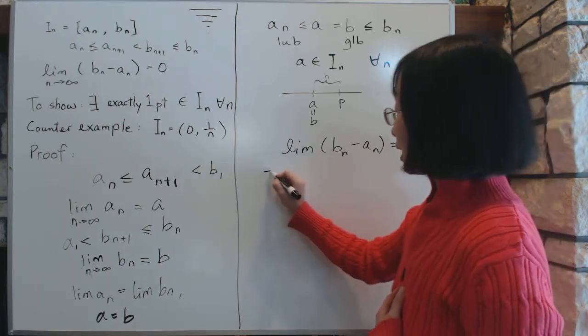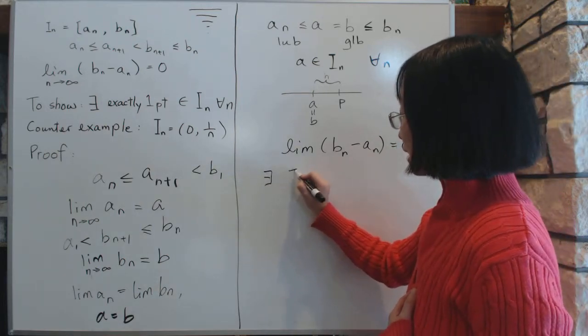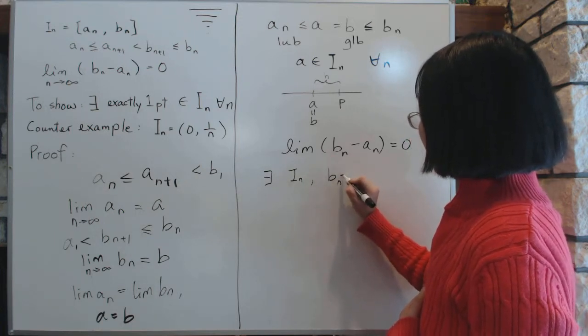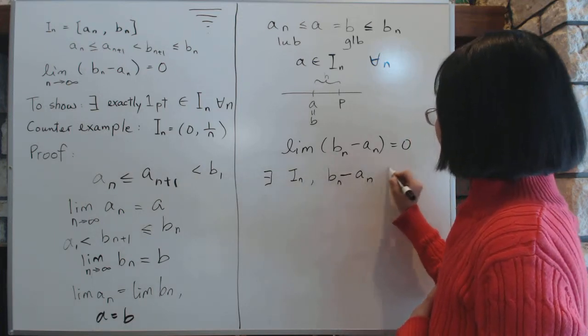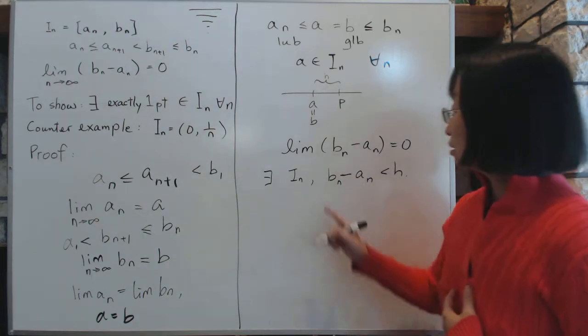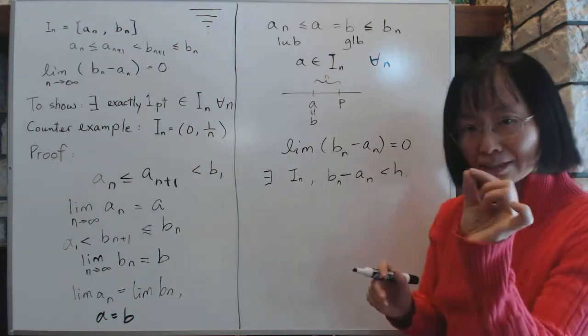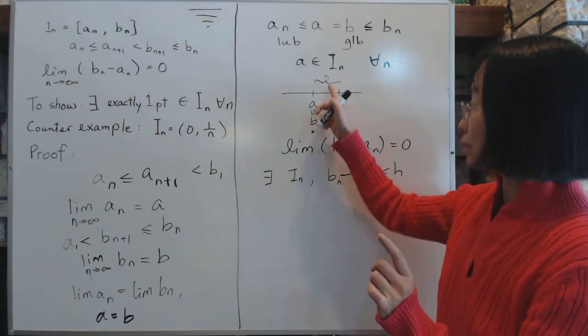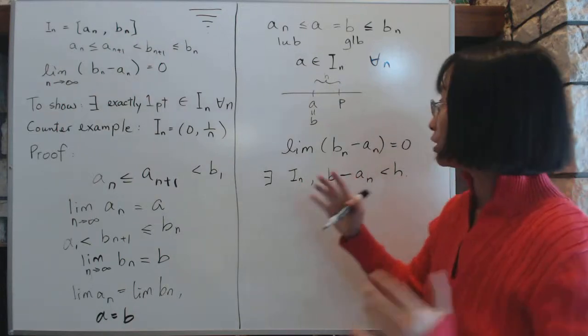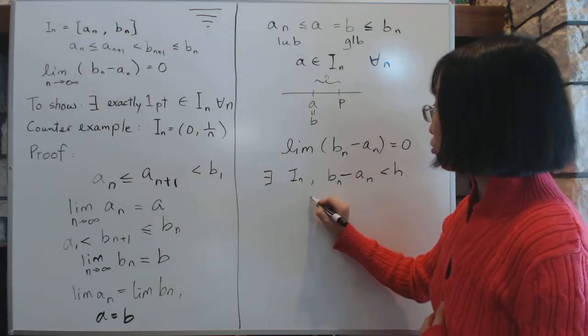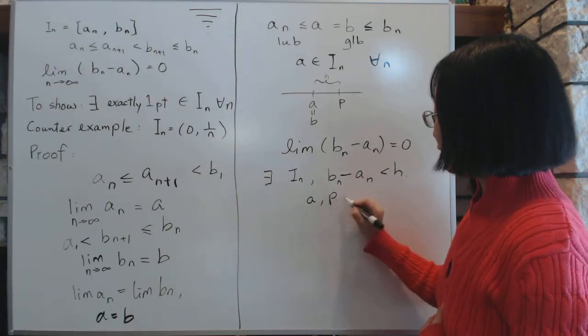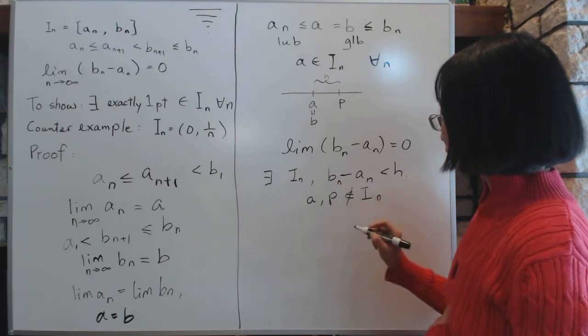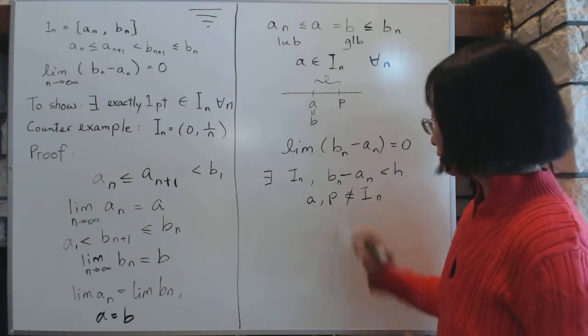Well then, but the problem is the limit of, but since the limit of b_n minus a_n is zero, that means there exists n, there exists I_n such that b_n minus a_n is going to be less than h, which, so the, there are tiny little intervals. It is too small. You can choose n big enough so that it's too small to contain something as wide as h, which means that a or p, the two points cannot belong to I_n at the same time.